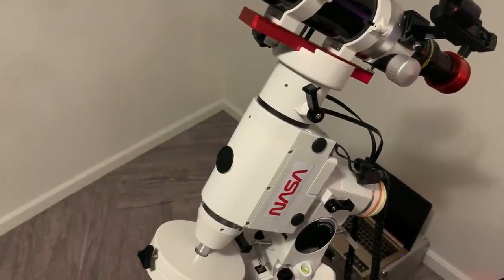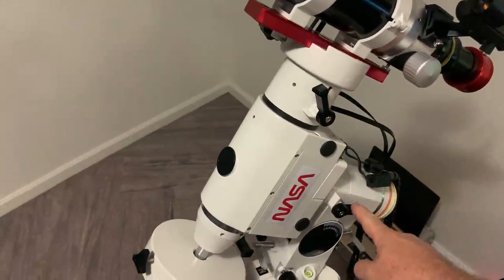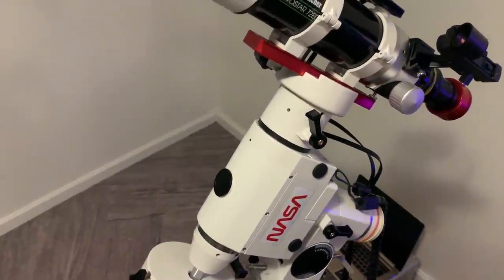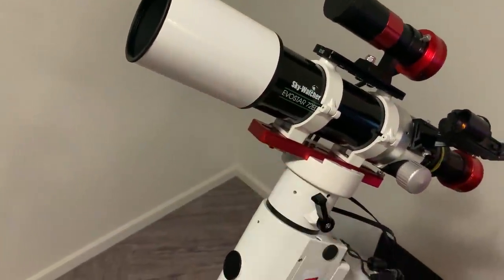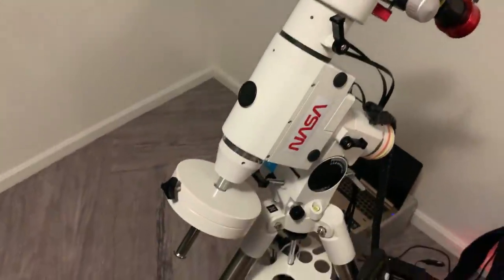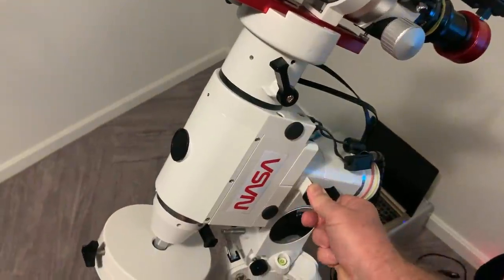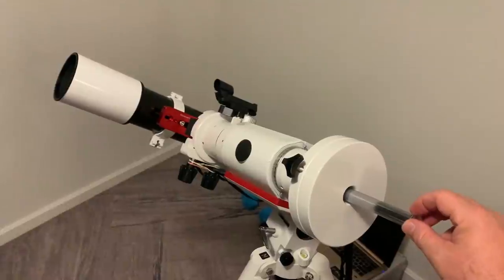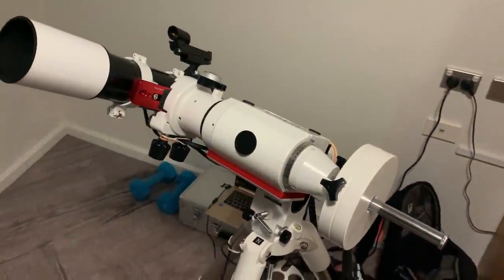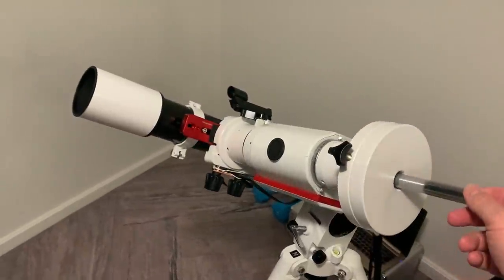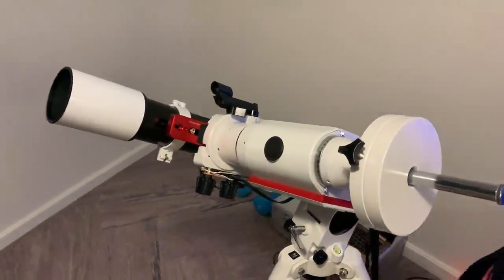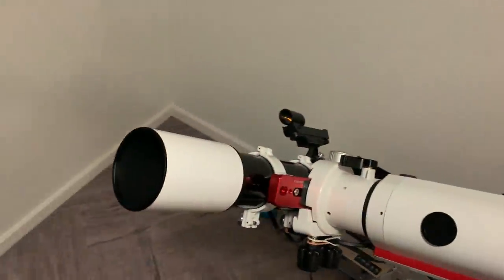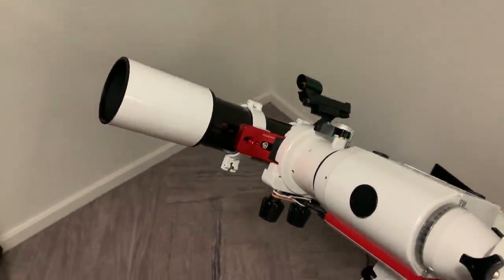So an equatorial mount like this will have two clutches, one for the right ascension axis and one for the declination axis. With the clutches engaged, the mount is rock solid. I cannot move that telescope by hand. If I release the right ascension axis, I can rotate this axis, and the purpose of that is to let you balance the mount carefully. As you can see, I can put that mount in any position and it will remain there. We balance by moving that counterweight in or out to accurately match the weight of the telescope and the cameras.